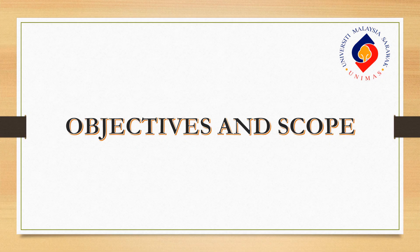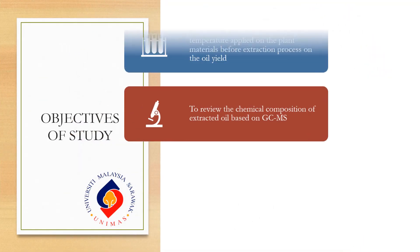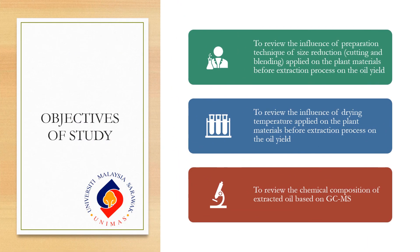This study is conducted to investigate further the manufacturing process of essential oil in terms of its extraction process, in order to enhance the quality of this industry and hopefully one day Malaysia can be an exporter instead of an importer. There are three objectives for this study. The first is to review the influence of size reduction technique — cutting and blending — on the oil yield. The second is to review the influence of drying temperature on the oil yield, and lastly to review the chemical composition of extracted oil based on GCMS.